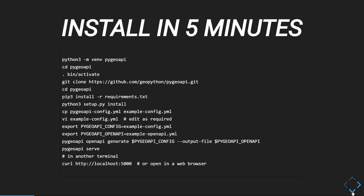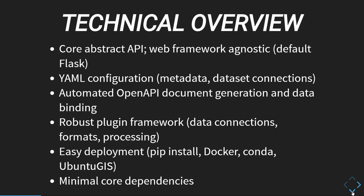This is the impatient install. One of my trademarks: if I can't install anything in five minutes, I just forget about it. PyGeo API is no different in terms of getting you up and running for an API server. We have a core abstract API — you can actually use PyGeo API without using it over the web. We have simple configuration management, automated OpenAPI generation, and a plugin architecture which allows you to define and build your own plugins depending on your requirements.